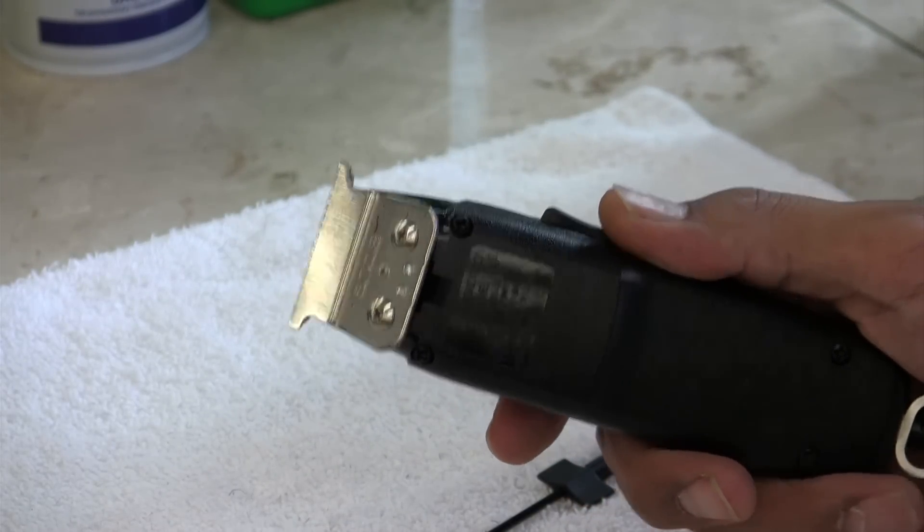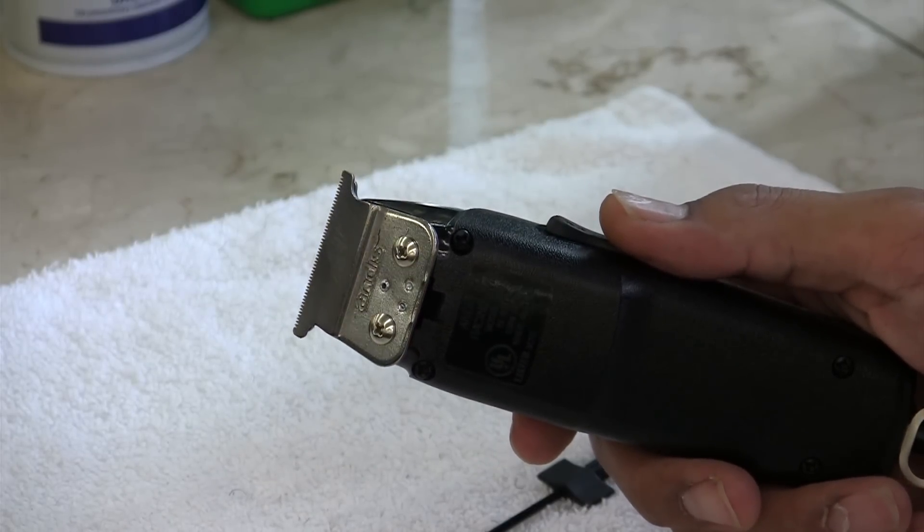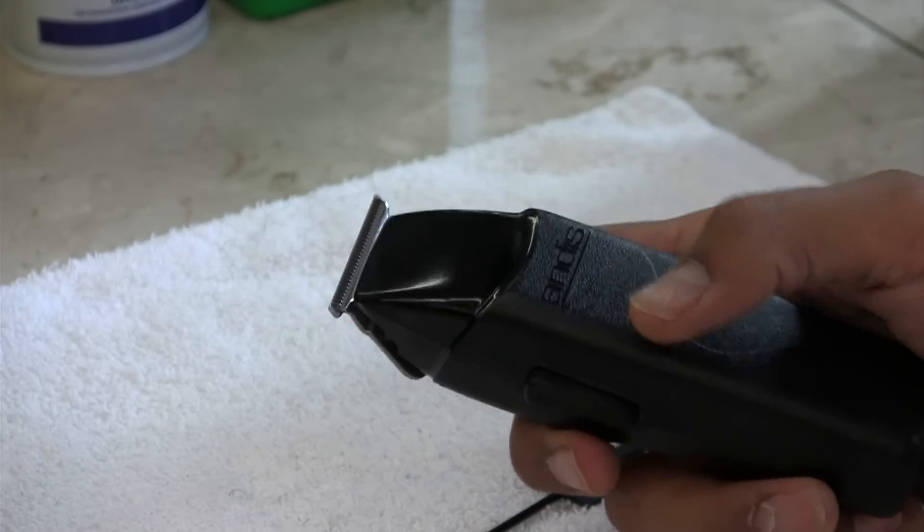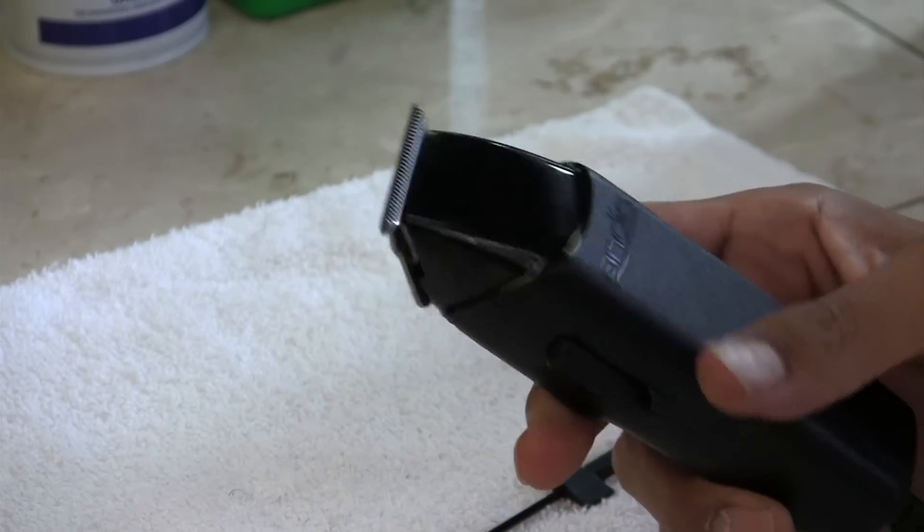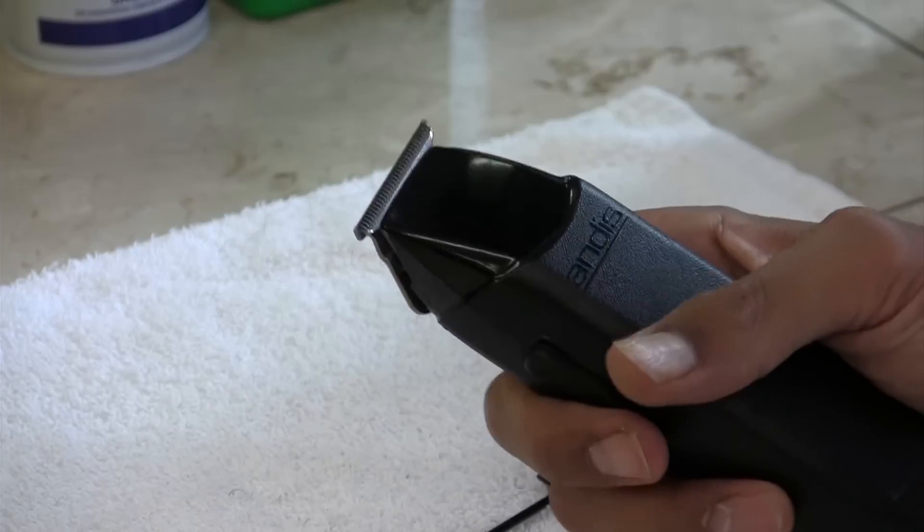I have the T-outliners, the Wahl detailers, Wahl heroes. I feel like they're all great to have in your arsenal. You shouldn't just have one or two pairs of liners. You should run a gambit. You should have all of them.